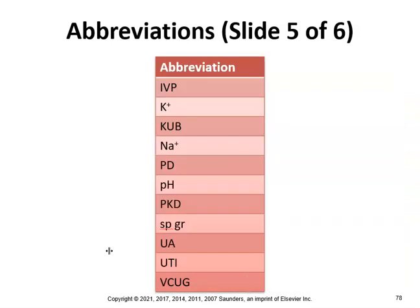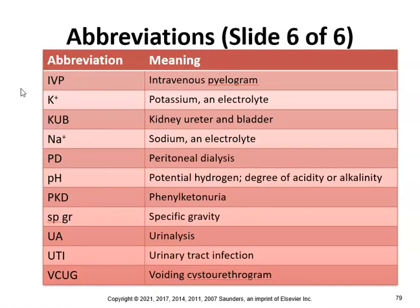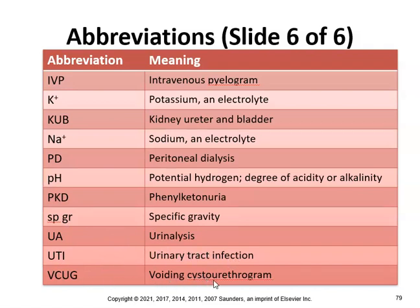Additional abbreviations: IVP is intravenous pyelogram. K+ is potassium electrolyte. KUB is kidney-ureter-bladder. Na+ is sodium electrolyte. PD is peritoneal dialysis. pH is potential hydrogen, the degree of acidity or alkalinity. PKD is polycystic kidney disease. SpGr is specific gravity. UA is urinalysis. UTI is urinary tract infection. VSUG is voiding cystourethrogram.